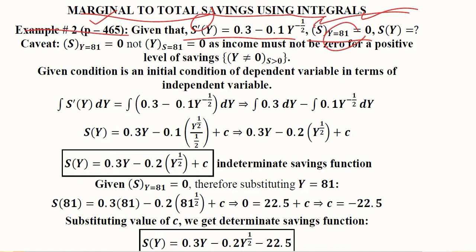That is the reversal of the initial condition. In the initial condition we usually start with the independent variable equal to zero, but here the independent variable Y equals 81, it is not equal to zero, whereas the dependent variable S is equal to zero.